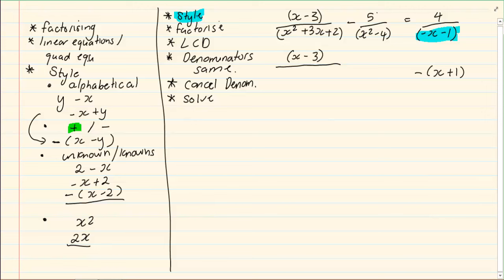Now, once we have seen our style is correct, we start factorizing. x squared plus 3x plus 2 can definitely be factorized. It is a perfect trinomial, leaving us with x plus 2, x plus 1. Minus x squared minus 4, it's 5 over x minus 2, x plus 2, difference of two squares. Equal, we have our 4 over minus x plus 1. Now, if you look at the denominators...